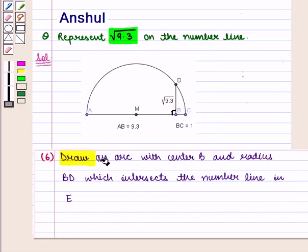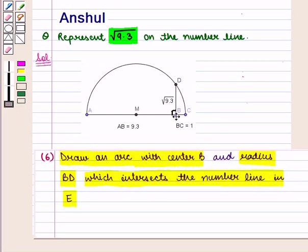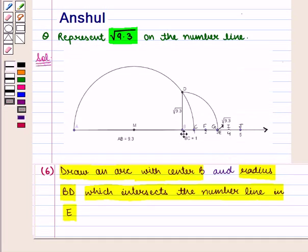We then draw an arc with center B and radius BD, which intersects the number line at point E. Here we treat point B as 0, point C as 1, and so on. With center B and radius BD, we draw an arc intersecting the number line at point E. E is the required point which represents square root of 9.3 on the number line. Thus we have represented square root of 9.3 on the number line.